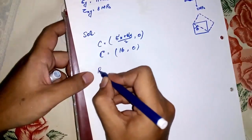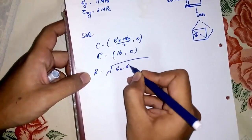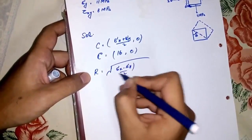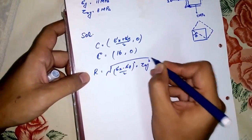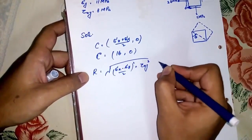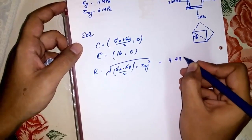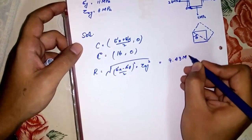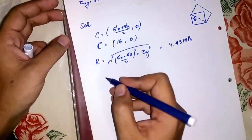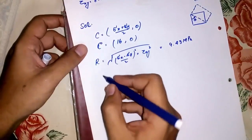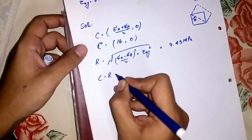Now we have to find the radius. The formula for the radius is: square root of [(sigma x minus sigma y) / 2] squared plus [tau xy] squared. The radius is 9.43 megapascals.